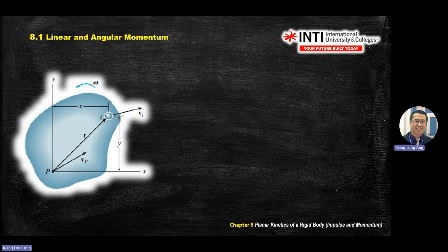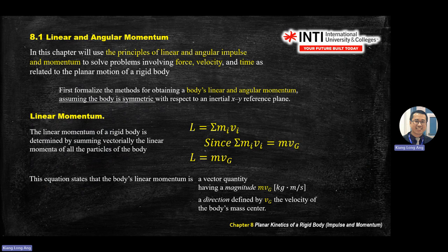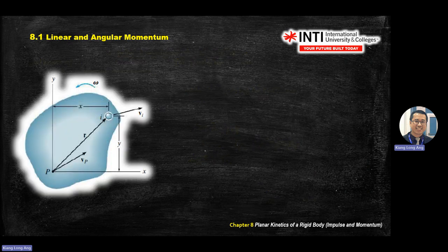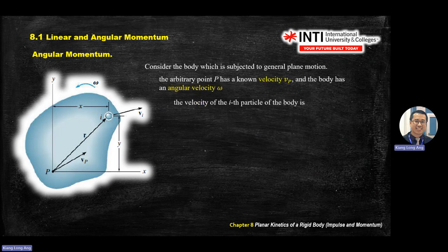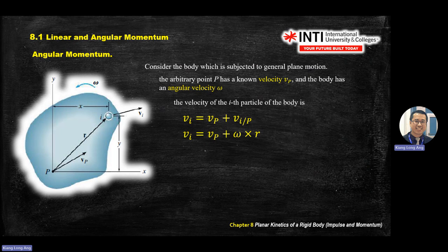Linear momentum covers straight-line or translation motion. For rotational or angular motion — which you saw in the previous chapter — the velocity of any interest point equals v_P from a reference point plus the relative velocity. Recall that velocity in terms of angular velocity is V = ωR.